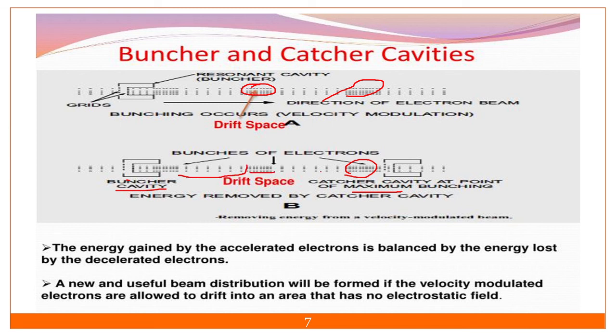The space in between the buncher cavity and the catcher cavity is called the drift space. Drift means we are forcefully moving the electrons — whatever electron is having higher velocity, we decelerate them, and whatever electron is having lower velocity, we accelerate them so they meet at one point.